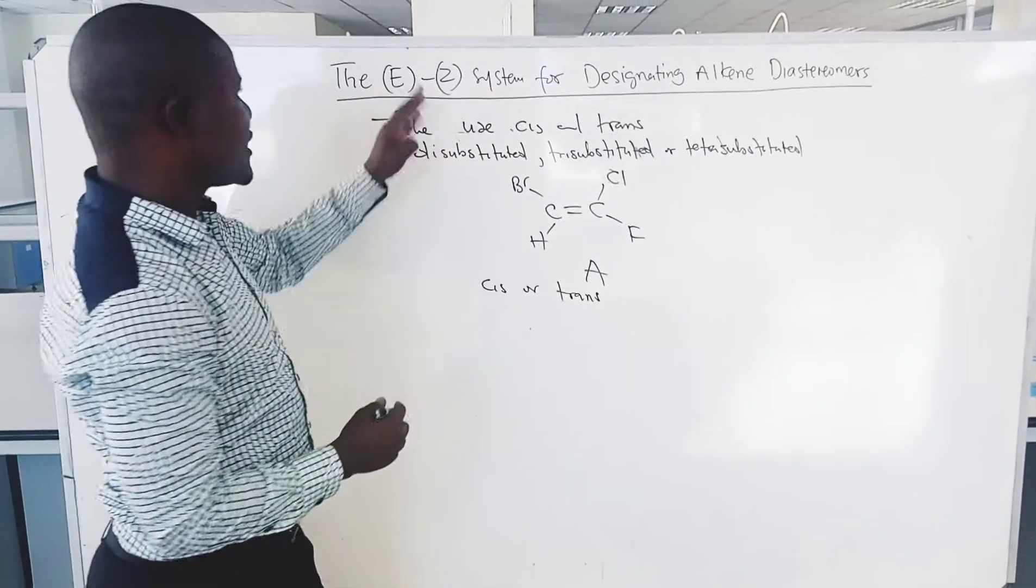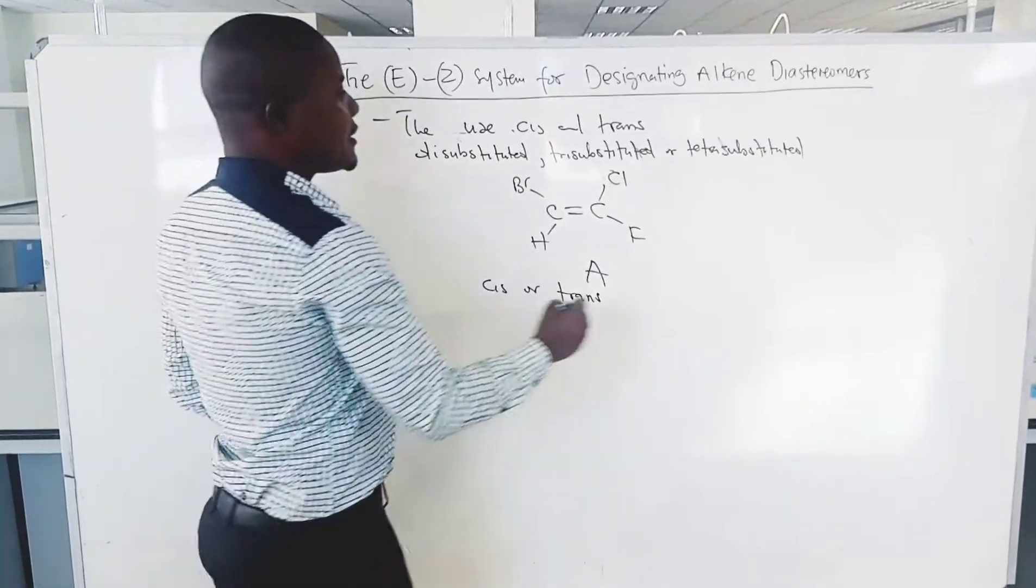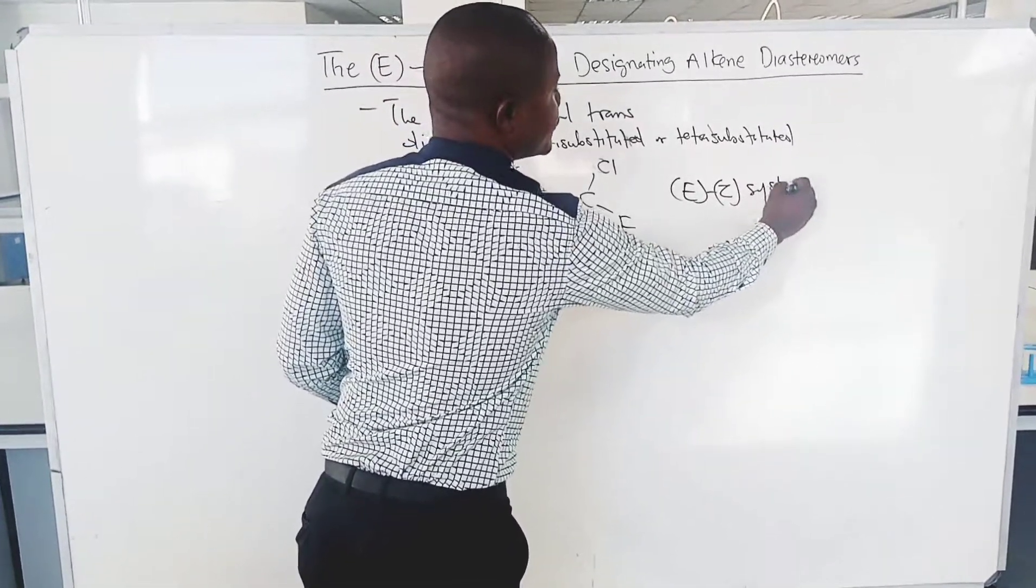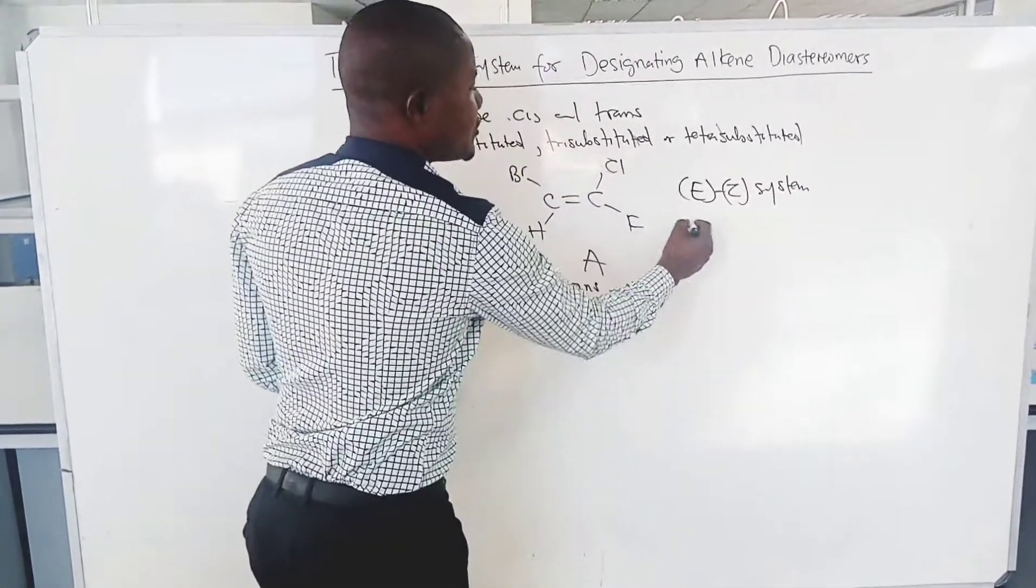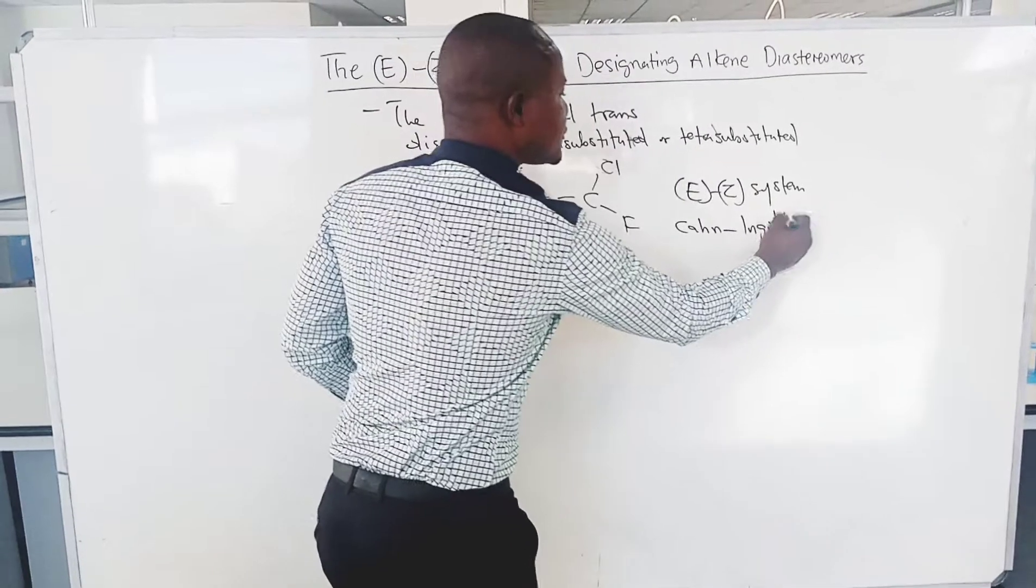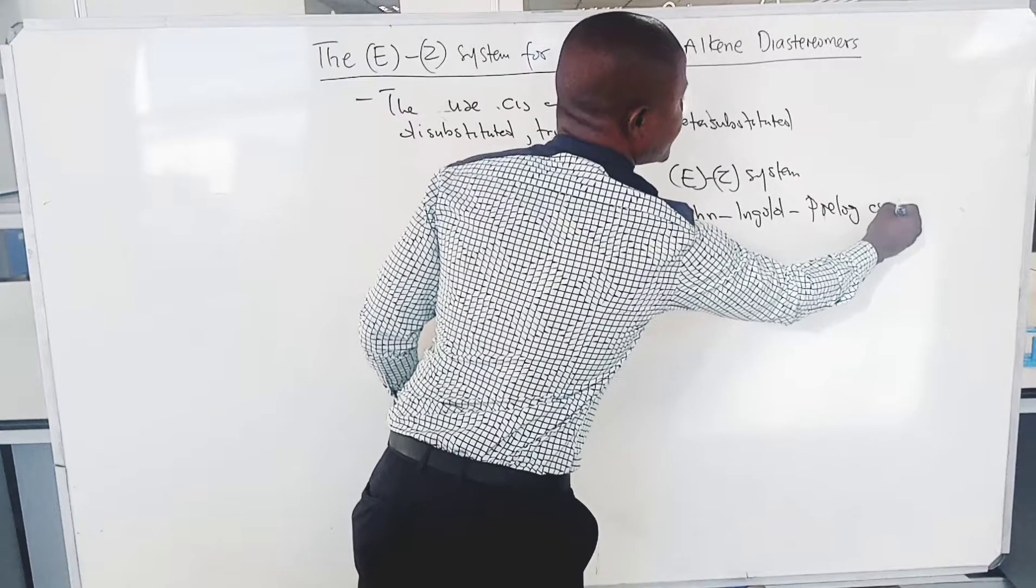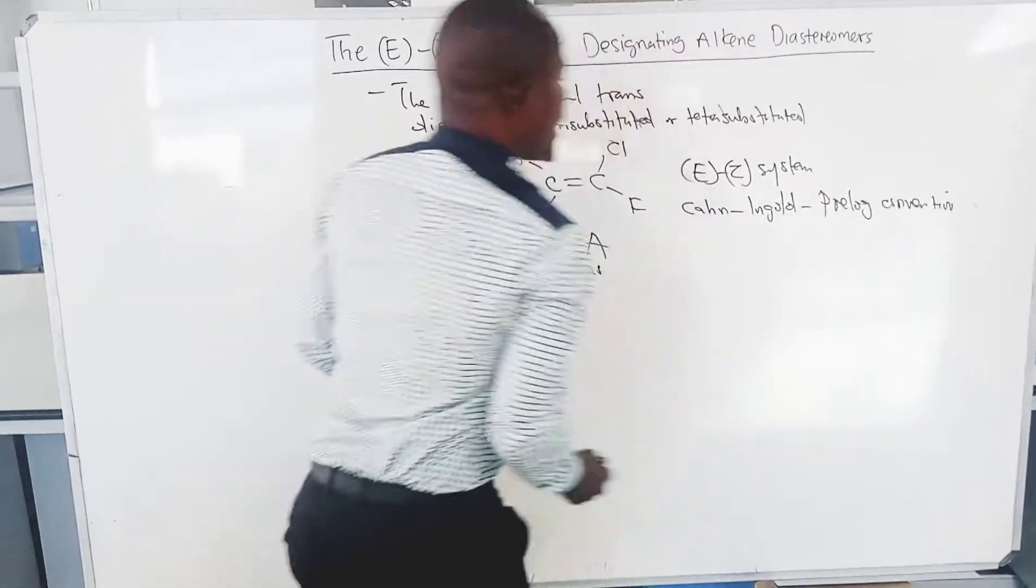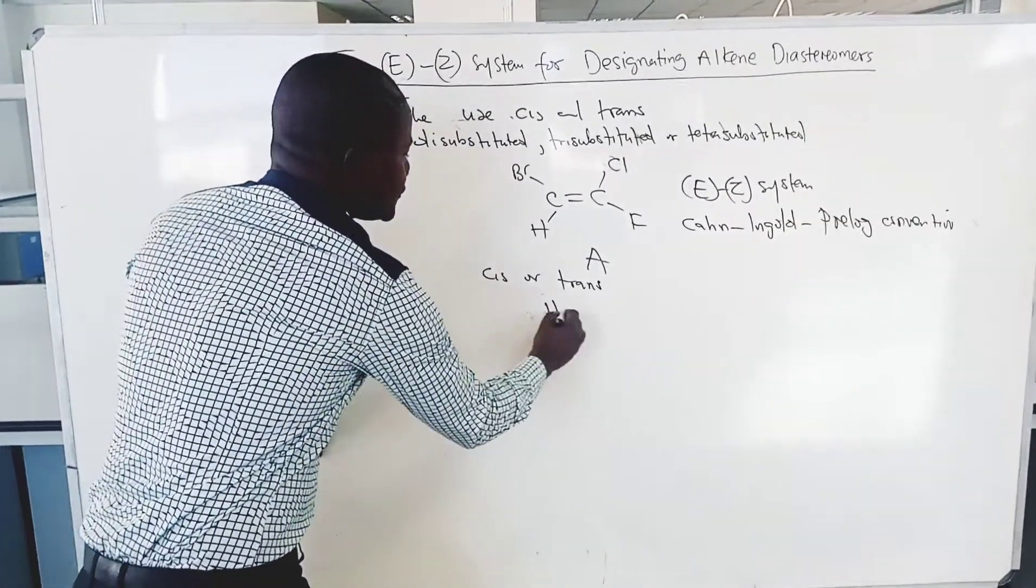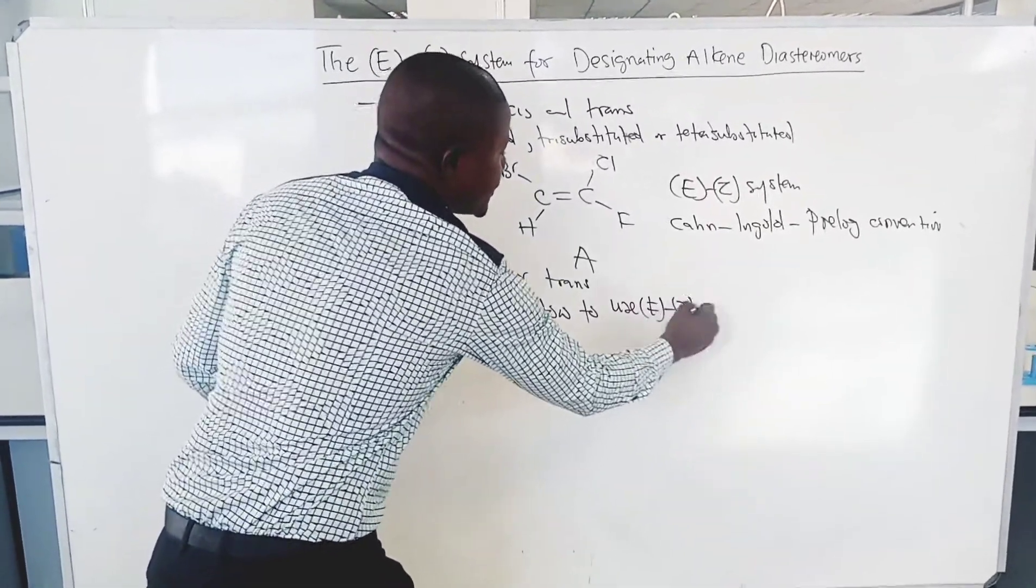The system that works for all alkene diastereomers is called the E-Z system, which is based on Cahn-Ingold-Prelog convention. How to use the E-Z system?